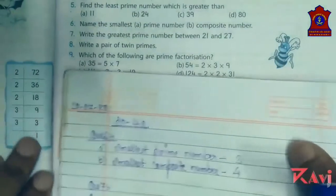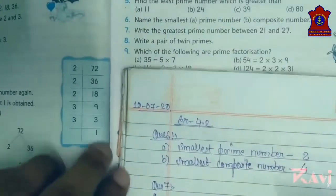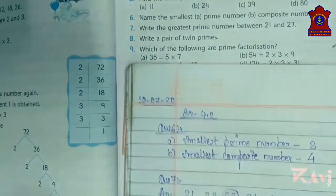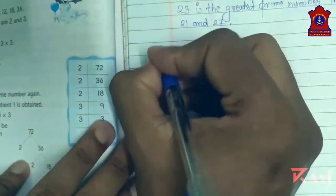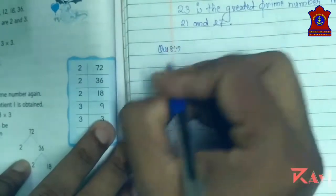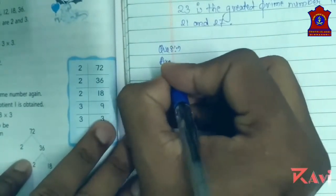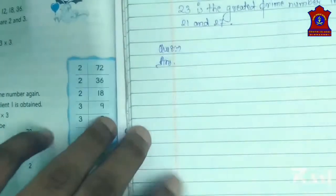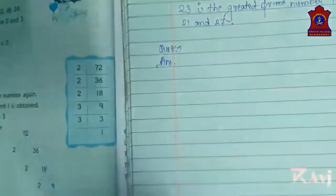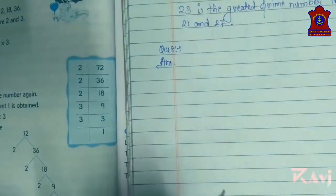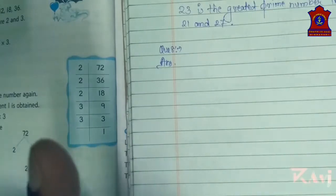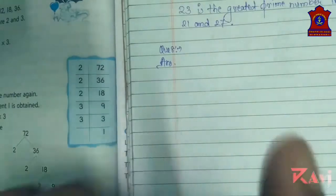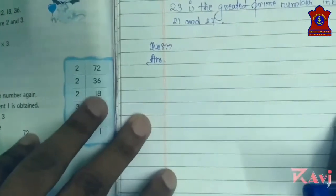Next is question number 8: write a pair of twin primes. First of all, what is a twin prime number? Two prime numbers with a difference of 2 are called twin primes. Yesterday you learned about it — when there is a difference of 2 between two prime numbers.